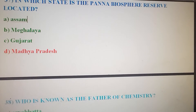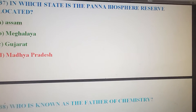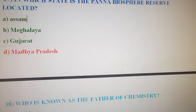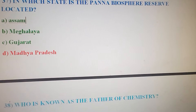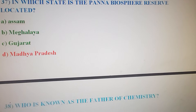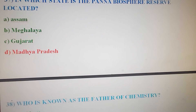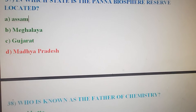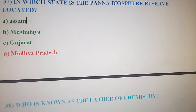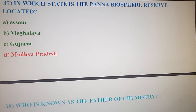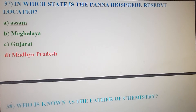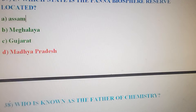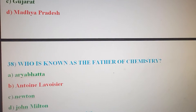Question: In which state is the Panna Biosphere Reserve located? Option A: Assam. Option B: Meghalaya. Option C: Gujarat. Option D: Madhya Pradesh. The correct answer is Option D, Madhya Pradesh.